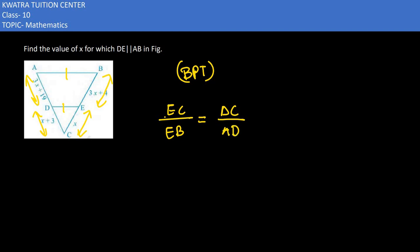And below what is AD? Here EC value is x, EB value is 3x plus 4. Right side we have DC value which is x plus 3, and below in the denominator we have 3x plus 19. Now here we use cross multiplication.